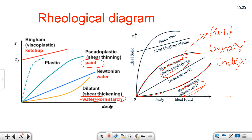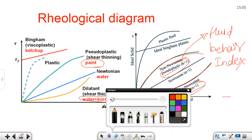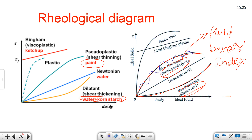Dilatant fluids are non-Newtonian because the nature of their curves is non-linear. Both pseudoplastic and dilatant curves are non-linear, and the difference is in the behavior index n. For pseudoplastic (example: paint), n is less than 1. For dilatant (example: water plus corn starch), n is greater than 1.